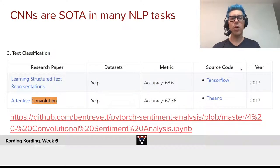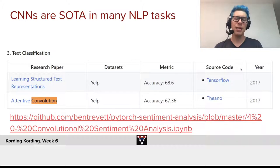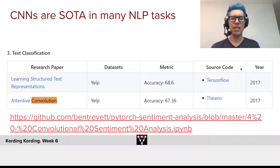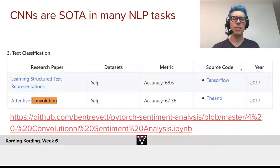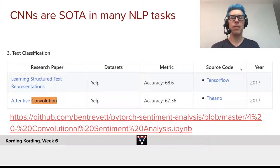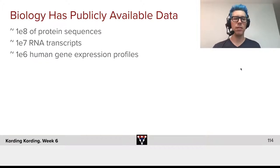Graph convolutions are also important in many natural language processing cases, for example in text classification. There are still significant cases where convNets are state-of-the-art. Importantly, convNets are relatively easy to train on relatively small computers.